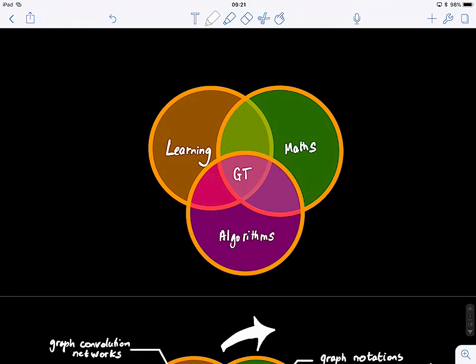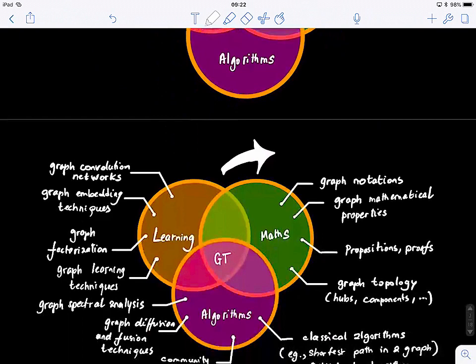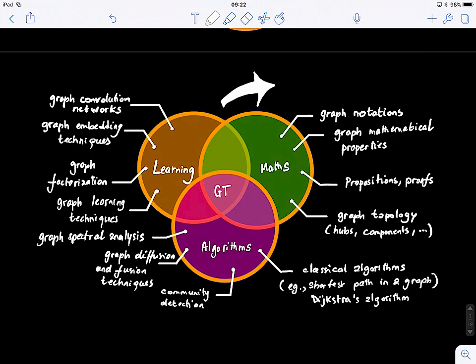Graph theory comes at the intersection of these three big circles. The first one is maths, the second one is algorithms, and the third one is learning. I have highlighted the key things that we will cover during this course.